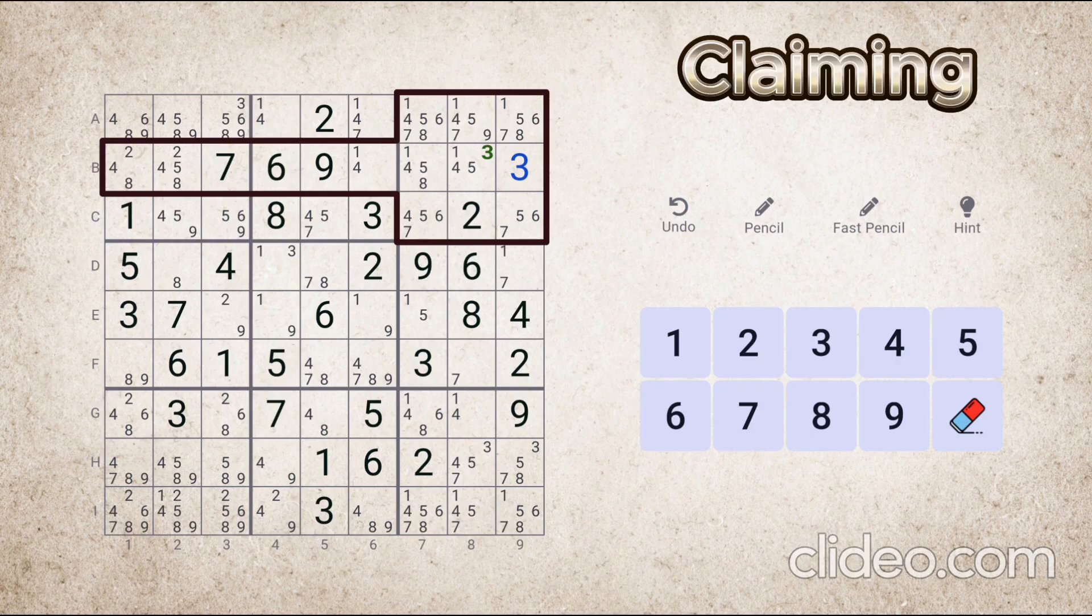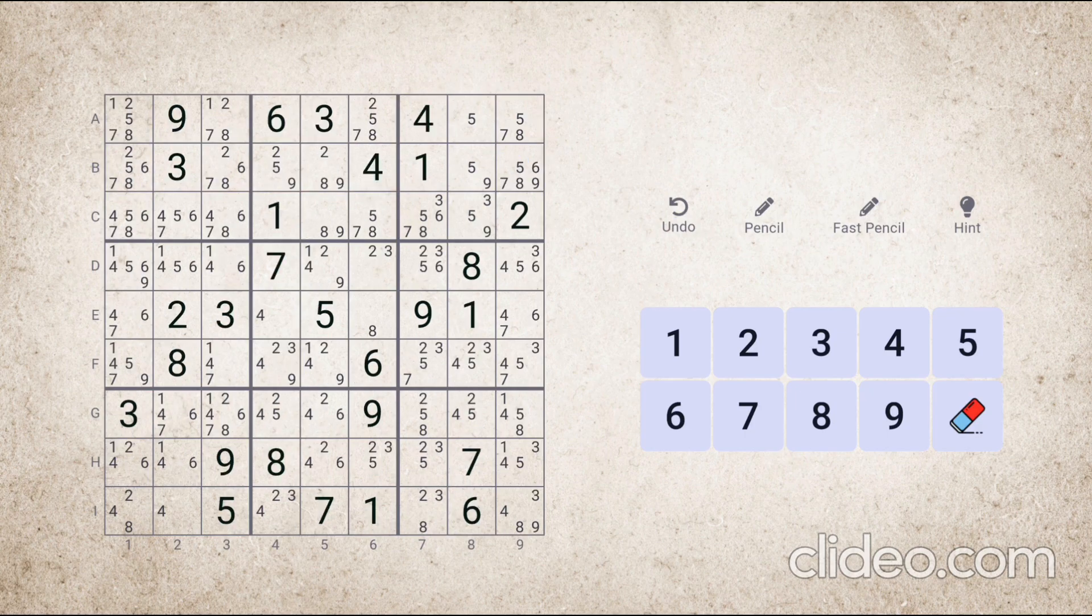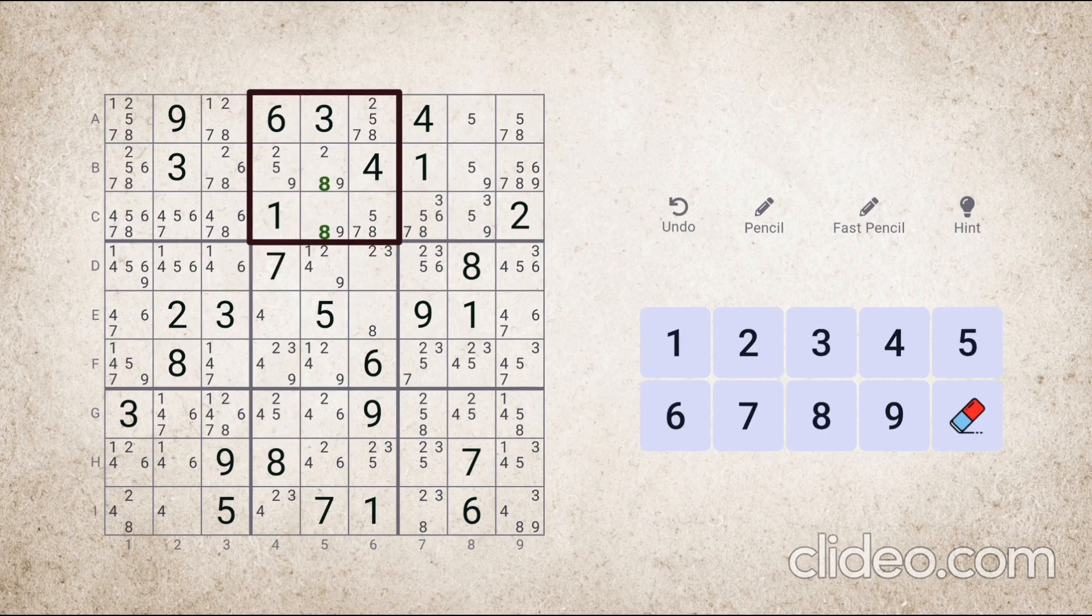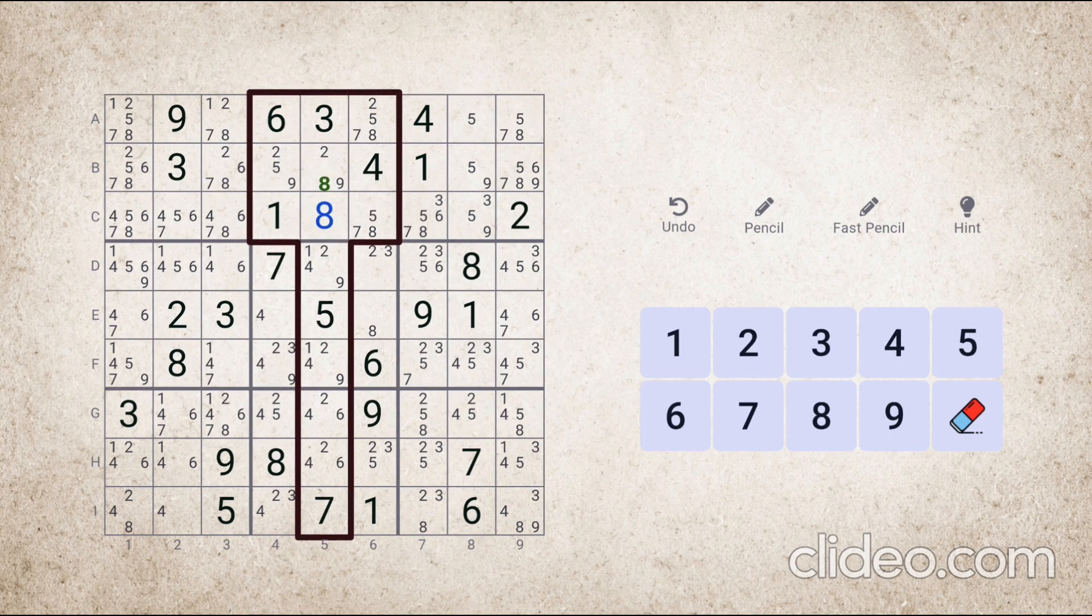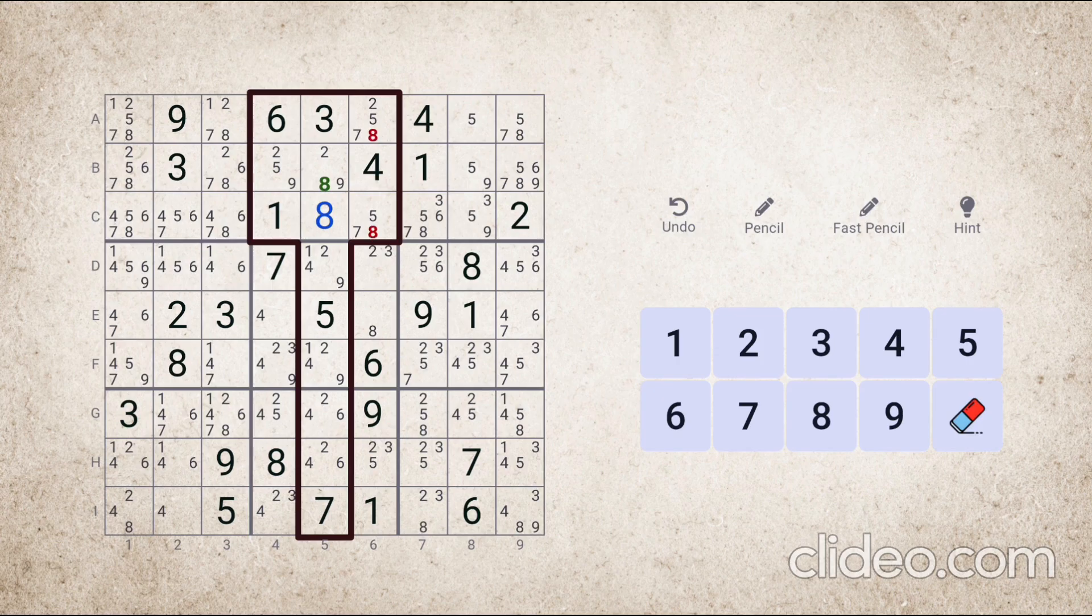Now let's look at another example of this type, which involves a column and a block. In this puzzle, look at number eight in fifth column. All the cells where number eight can be placed are part of this block. So again, whether we place eight here or here in this column, number eight will also be placed within the block at the same time. And because of this, we can remove number eight from these places.